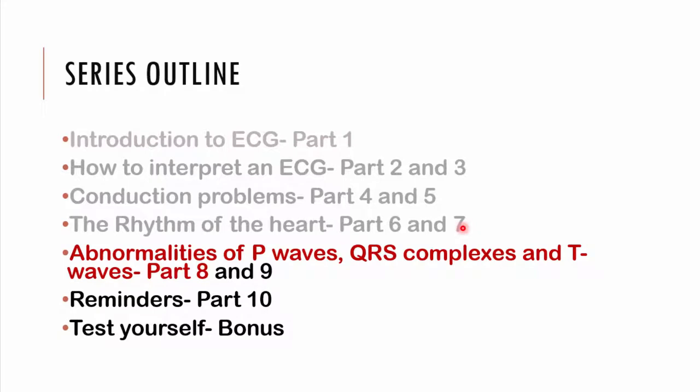In the previous lecture, we looked at the rhythm of the heart. In these next two lectures, we're going to be looking at abnormalities of the P wave, the QRS complex, and the T waves. In this review lecture video, we'll look at abnormalities of the P wave and the QRS complex. Then in the subsequent lecture, we'll look at abnormalities of the T wave as well as the ST segment.